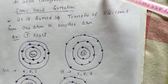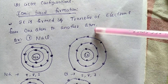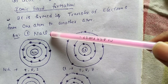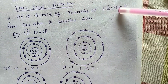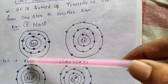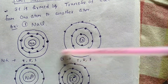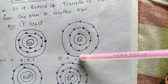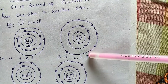Now, ionic bond formation. An ionic bond is formed by transfer of electrons from one atom to another atom. For example, NaCl formation. It involves a sodium atom and a chlorine atom. Sodium configuration: 2,8,1 (shell method). Chlorine configuration: 2,8,7.